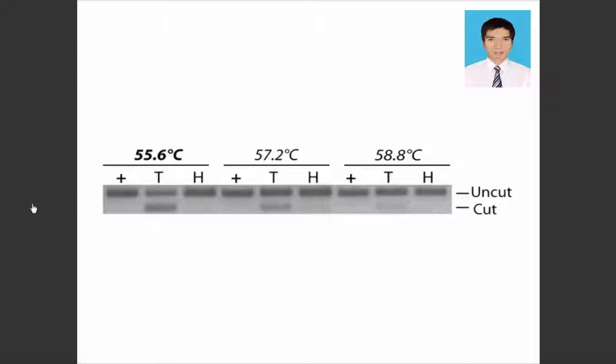Optimal PCR amplification conditions should amplify methylated and unmethylated amplicons in proportion and without bias, resulting in an equal amount of cut and uncut PCR product. As seen here, the optimal temperature is at 55.6 degrees Celsius.